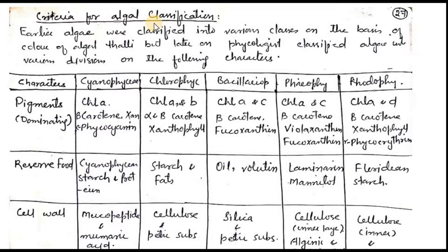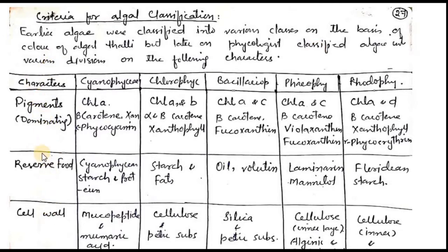What are the characters by which we can classify algae? Earlier classification was generally based on single characters — that is, on the basis of pigment, meaning the color of the algal thallus. But later on, phycologists — those scientists or researchers who study algae — found that there are different characters by which we can classify algae.